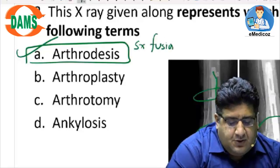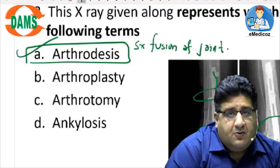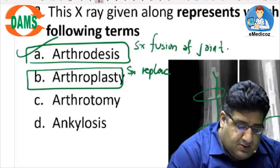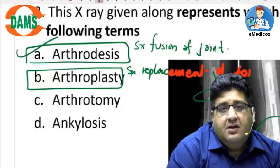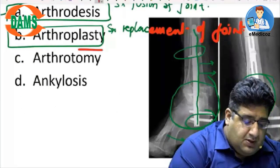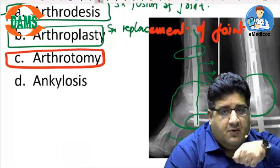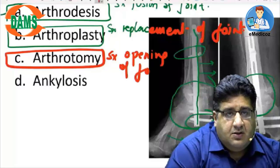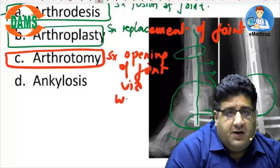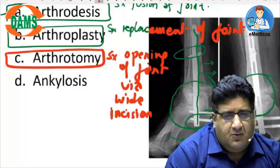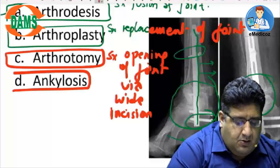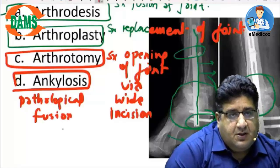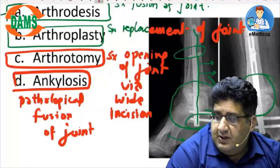Surgical fusion of a joint is arthrodesis. What is arthroplasty? Surgical replacement of a joint. What is arthrotomy? 'Arthro' means joint, 'tomy' means opening — so arthrotomy is surgical opening of a joint via a wide incision, where you irrigate, debride, lavage, etc. Ankylosis is pathological fusion of a joint. So the correct answer is arthrodesis.